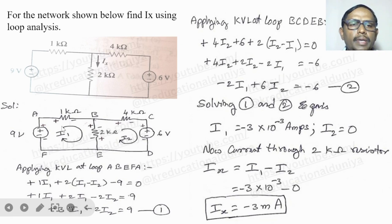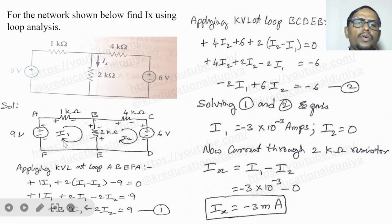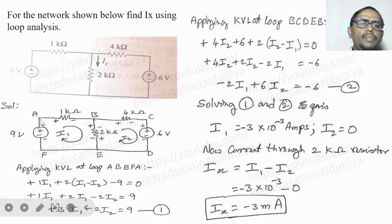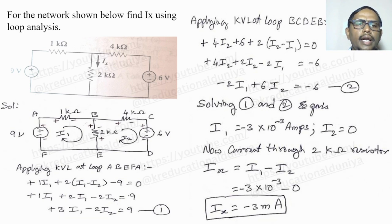Assume that every current is flowing in a clockwise direction. Draw the current flow clockwise in the inner loops and name them I1 and I2. When applying KVL, your starting letter and ending letter must be the same. Applying KVL at loop A-B-E-F-A.